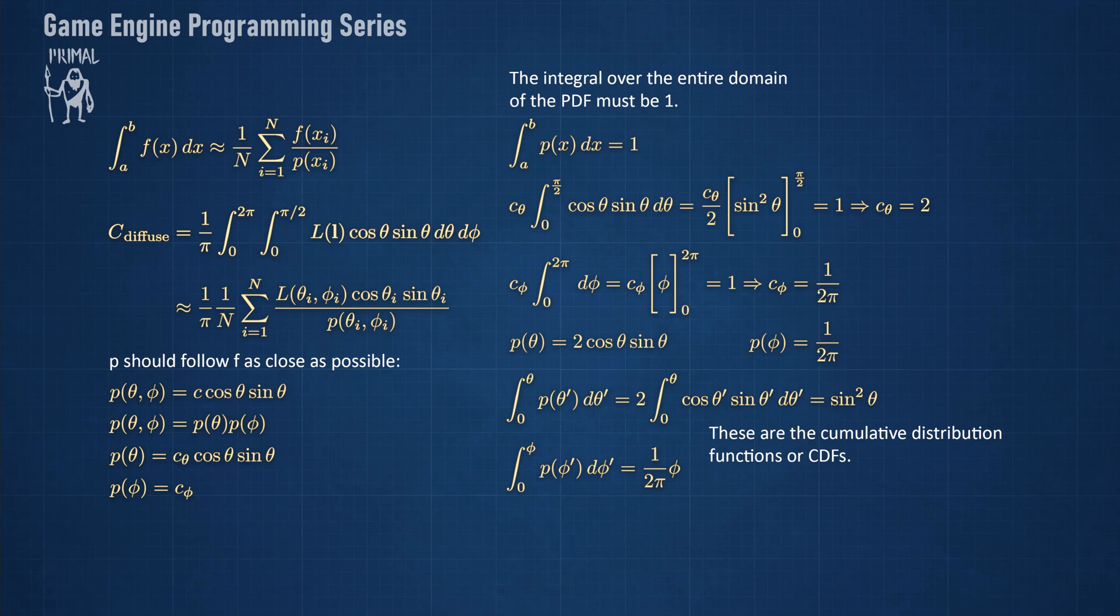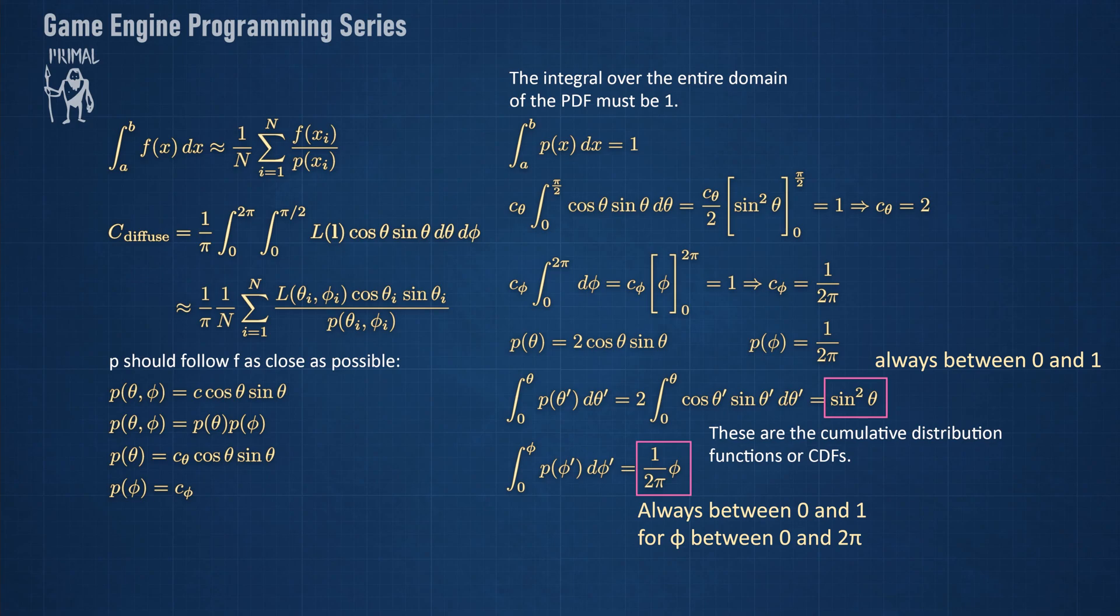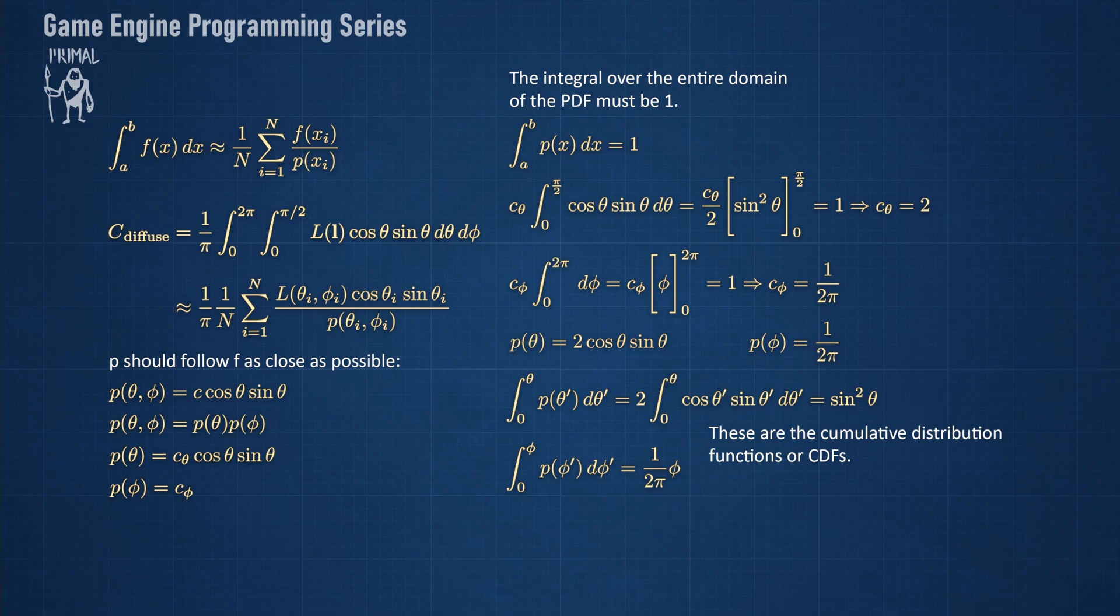Now please pay attention to the fact that for any random theta or phi within the integration domain, both of these functions return a random value between 0 and 1. So we can use this in reverse in order to map random values between 0 and 1 to random values for theta and phi in the integration domain. And that's how we arrive at those equations that I showed in the start of the video. You can find more about this process by looking up the term inverse transform sampling.